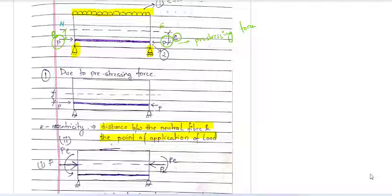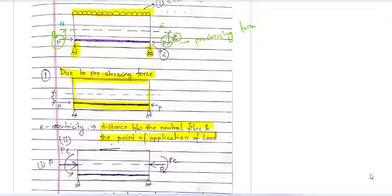Due to two types of loading, how do stresses develop and how is the stress diagram drawn? How do we calculate stress at the top fiber and bottom fiber? To understand this, we are studying the stress concept method. First, we consider the effect due to pre-stressing force only — a simply supported beam with pre-stressing force P at eccentricity E from the neutral fiber, without any external loading.